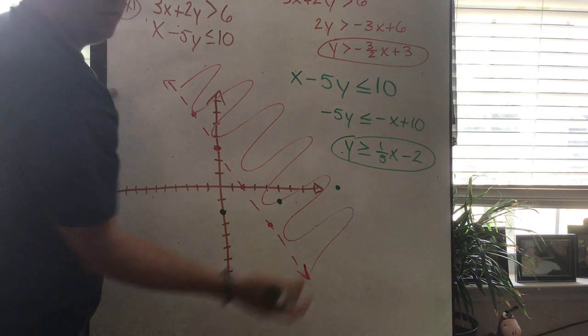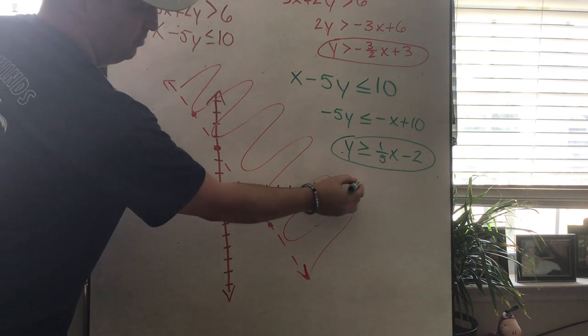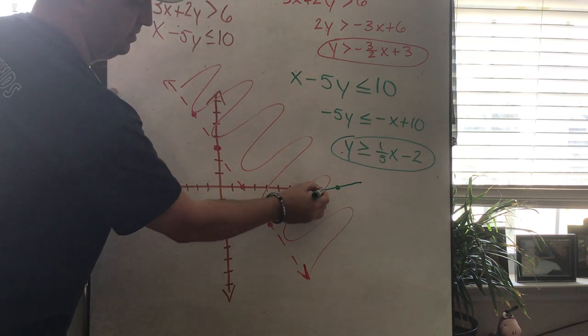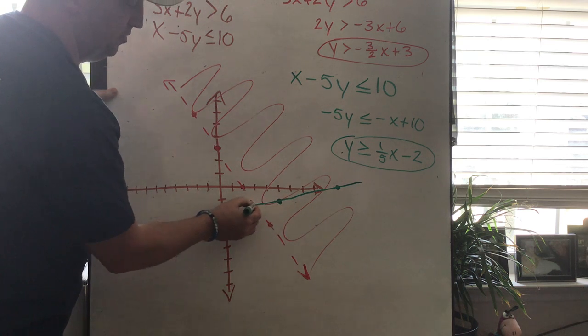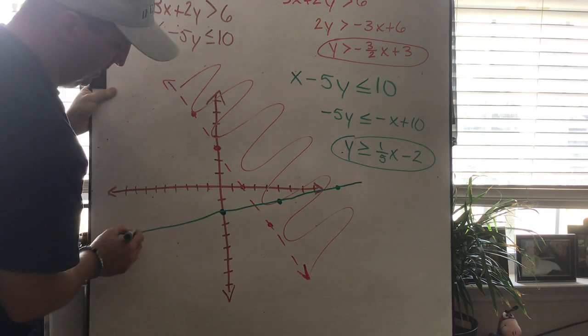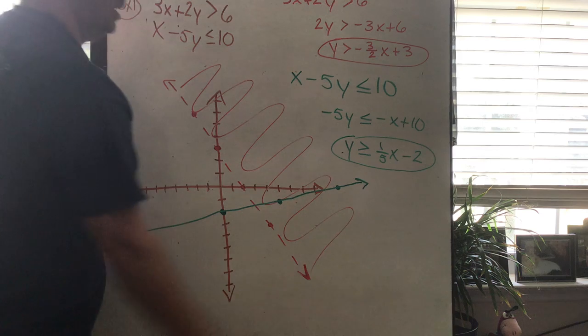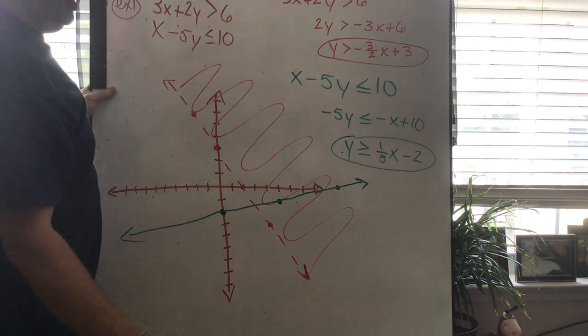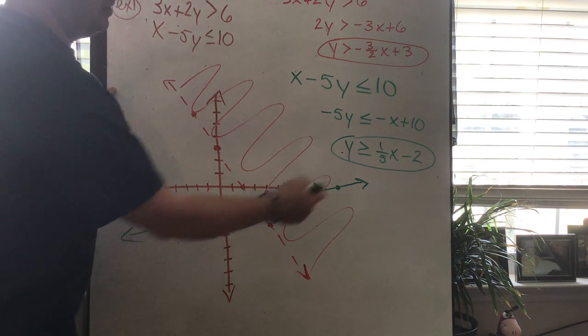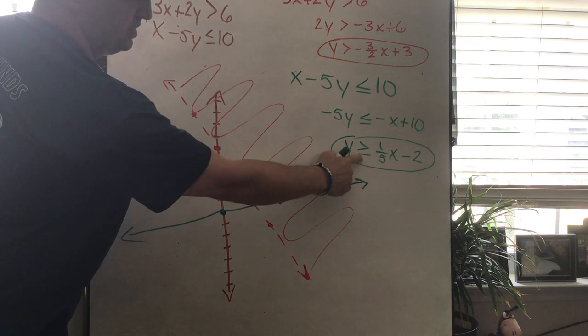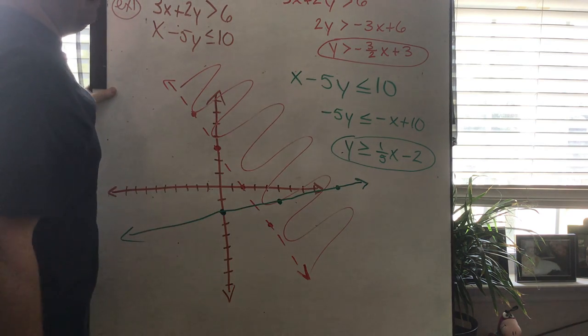This line, because it has the or equal to, is going to be a solid line, because it includes the line. The line is included as part of my answer. My line is not too straight, but you get the idea there. Once again, once I get my line graphed, I determine this one's solid, because it has the or equal to, versus dashed, because that one does not.